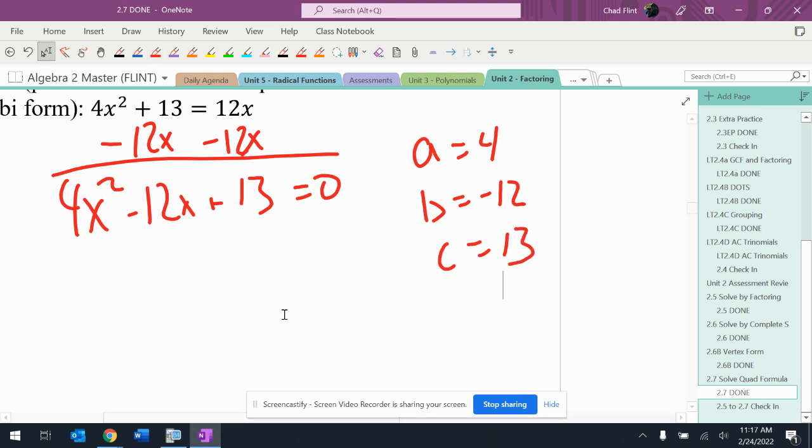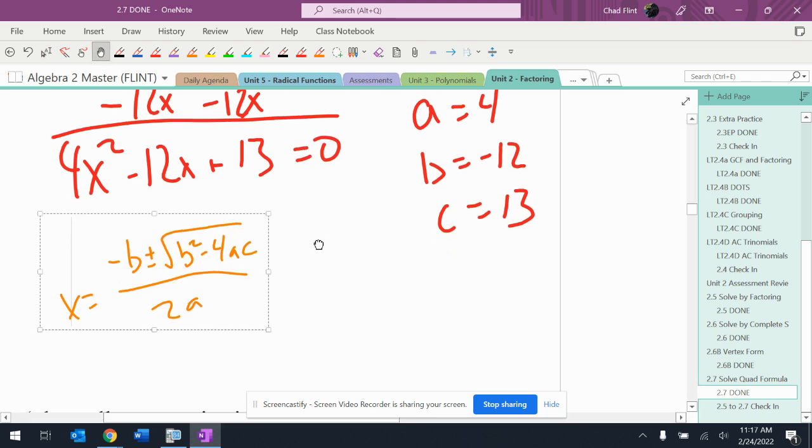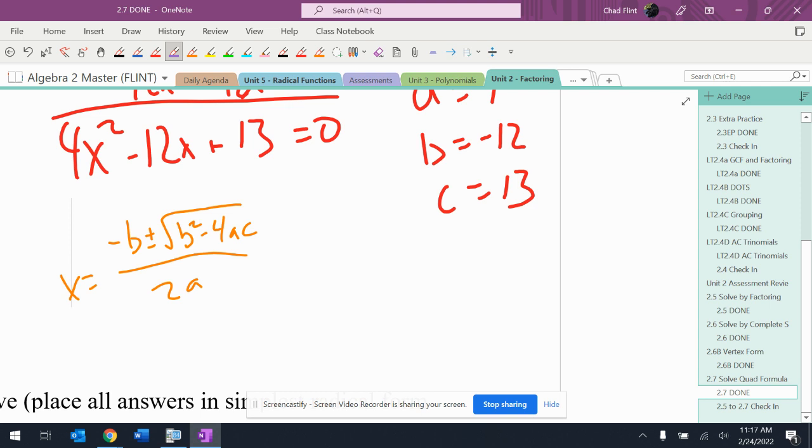All right. My quadratic formula, which is saved in my clip and paste, is right there. So that means I'm going to have negative negative 12 plus or minus